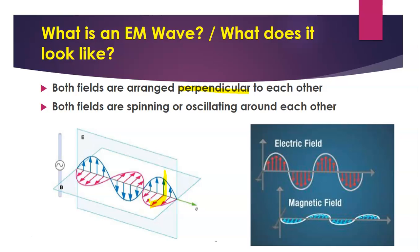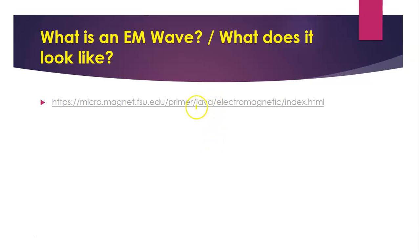As this energy is traveling — look at the propagation arrow — you have two transverse waves that are perpendicular to one another, but imagine that they're also spinning around each other. That's what we mean when the electrical field and the magnetic field are oscillating or spinning around each other. I have a little hyperlink here I want to show you.